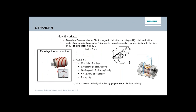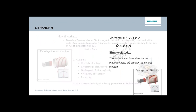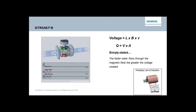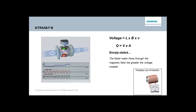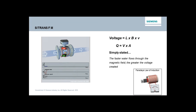Now we'll get into the technical aspects and talk about the science associated with mag meters. Mag meters operate based on Faraday's Law of Electromagnetic Induction. This looks very complicated, but I'm going to simplify it because I'm not an engineer, so simple is what I do best. Basically, if you look in the lower right-hand corner, you'll see the concept of Faraday's Law. It says that if you have a conductive material — in this case represented by a magnet — passing through a magnetic field, it will create a voltage, and that voltage will be directly proportional to the velocity of the material going through it.